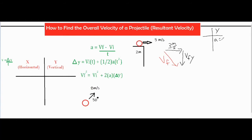In the y column, I have an acceleration of negative 9.8 meters per second squared — that's acceleration due to gravity. The initial velocity is zero meters per second because the object isn't moving up or down at the start; it's only moving three meters per second in the horizontal direction. The third variable is delta y of negative two meters, because the ball is displaced downwards.